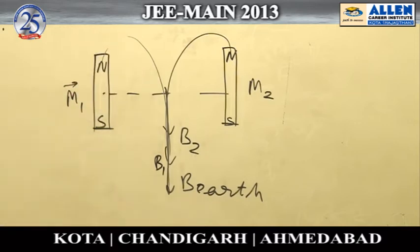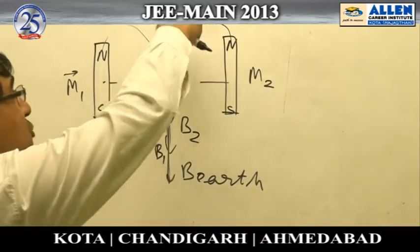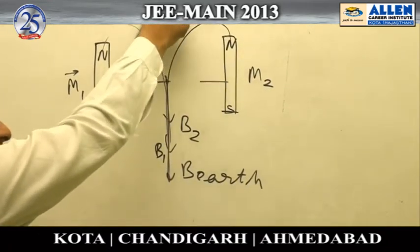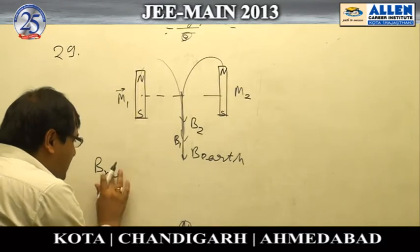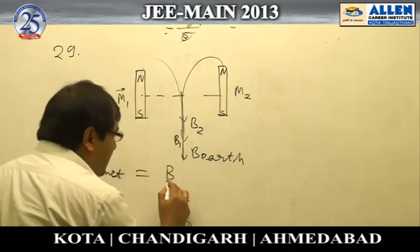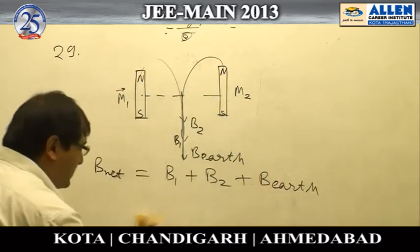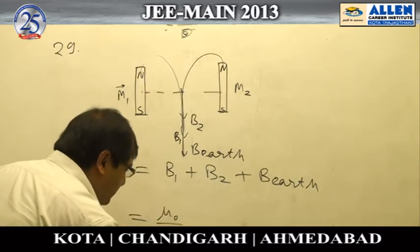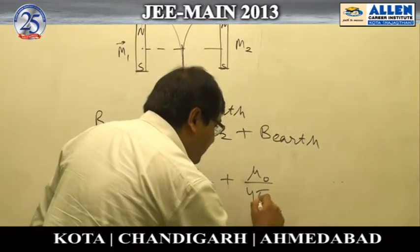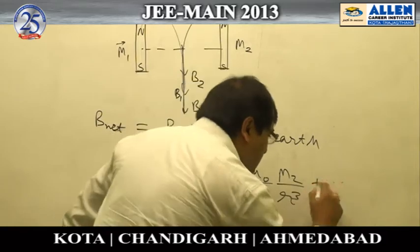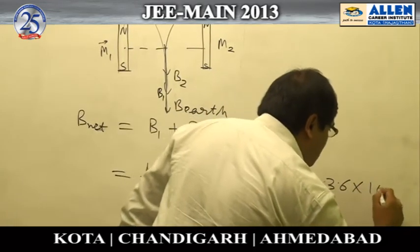Since the magnets are pointing towards south, and this is the south pole and this is the north, the Earth's magnetic north pole is located there, giving a magnetic field in the same direction. So the net magnetic field at this point will be B₁ + B₂ + B_earth, which equals (μ₀/4π)(M₁/r³) + (μ₀/4π)(M₂/r³) plus the Earth's horizontal magnetic field component of 3.6×10⁻⁵.